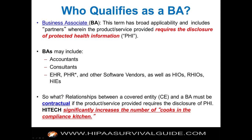EHR vendors, PHR vendors, personal health records hooked to an EHR, other software vendors, HIOs, regional HIOs — these are all examples of business associates. The relationships between a covered entity and a BA must be contractual. HITECH has really increased the number of cooks in the compliance kitchen — there's just a lot more people now.